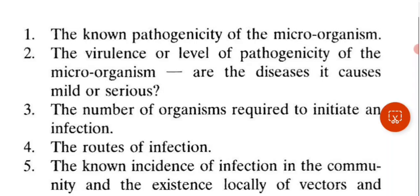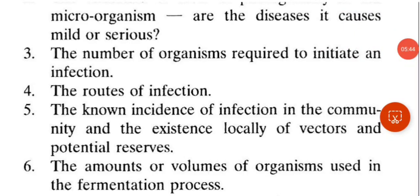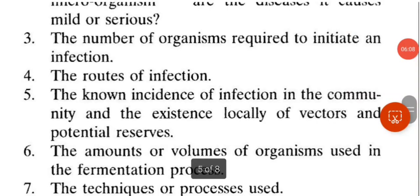Next is the known incidence of infection in the community, existence of local vectors, and the volume of organism used in the fermentation process. Availability of treatment is also considered — if a vaccine exists, it can be given to all workers. The process type also matters: batch is a closed system with less contamination risk, while continuous culture is an open system with more contamination chances.